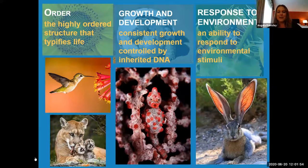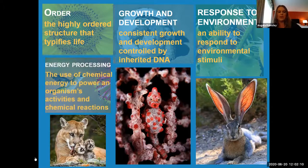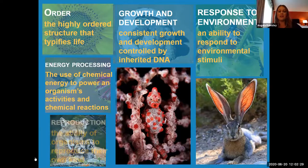There's also response to environment — the ability to respond to environmental stimuli. Think about if a bee comes and stings you, you're going to notice and react to it. All living things are able to do this as well. There's also energy processing. Everything needs energy in order to survive. Organisms get energy in different ways, but all living things have to get energy somehow. The use of chemical energy to power an organism's activities and chemical reactions is consistent across all living things.